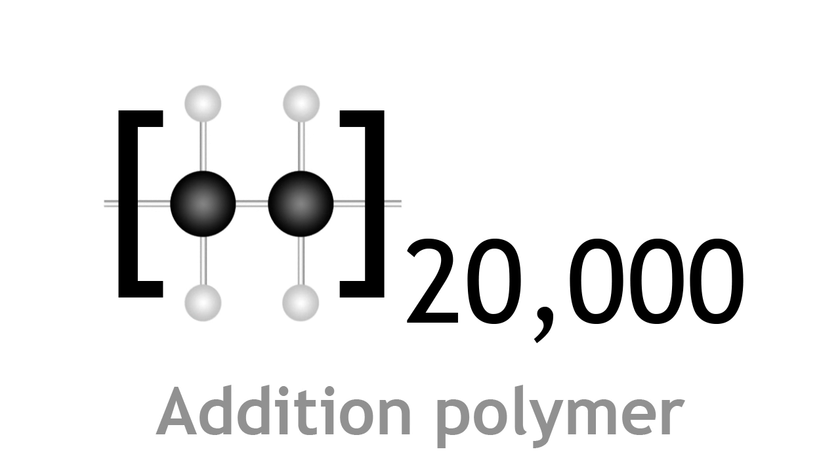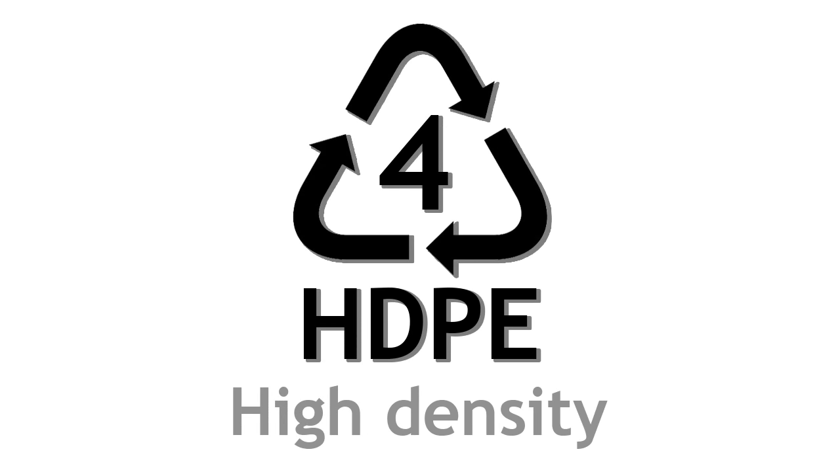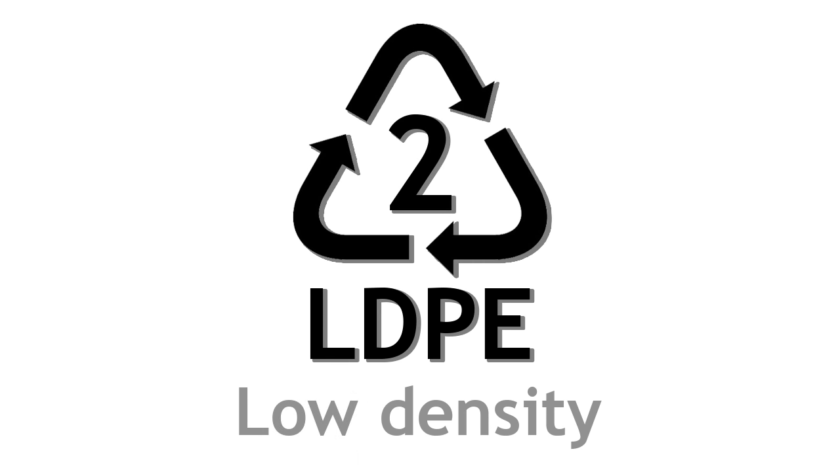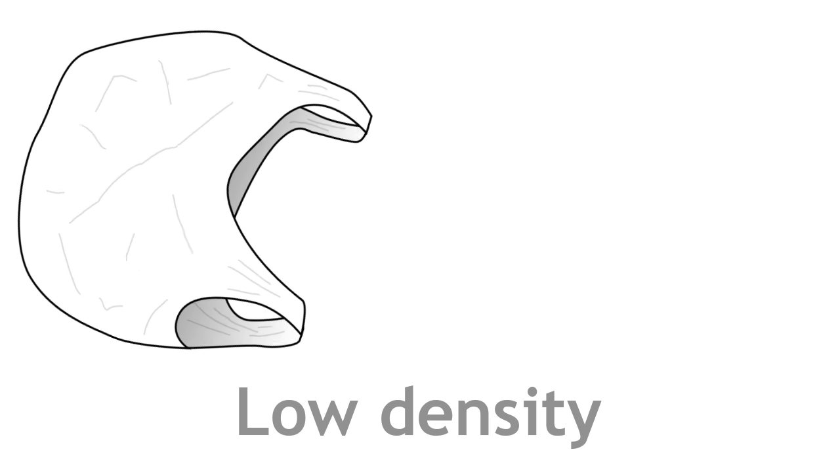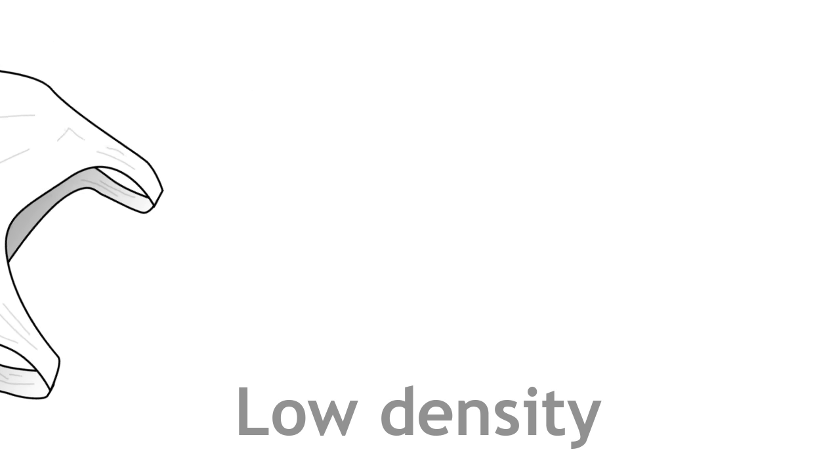There are two different forms of polyethene: low density and high density polyethene, differing in how they are manufactured and their properties. Low density polyethene is commonly used for plastic bags and similar thin sheet-like low strength products.